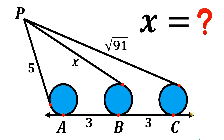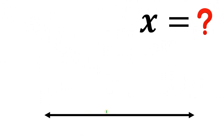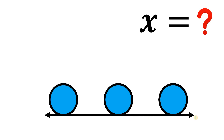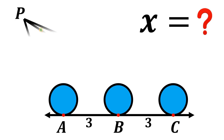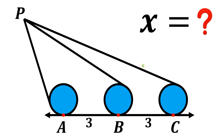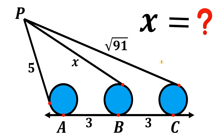Today we will answer a geometry challenge. Given a line, let's draw three congruent circles with points of tangency called point A, point B, and point C. The distance from A to B is 3 and the distance from B to C is also 3. Let's call point B equal to P and draw segments tangent to the circles, where one segment measures 5 units, the larger segment measures √91 units, and the middle segment measures x units. What is the exact value of x?